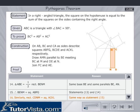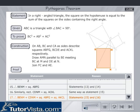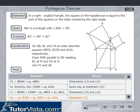Similarly, rectangle CDNM = square ACKL. Therefore, BENM + CDNM = square ABFG + square ACKL. This means square BCDE = square ABFG + square ACKL.